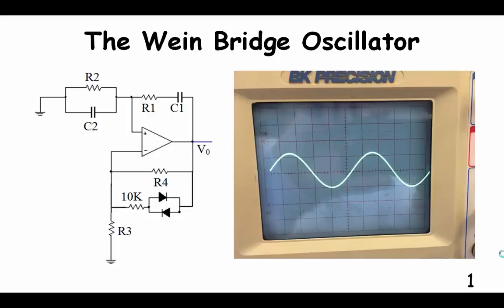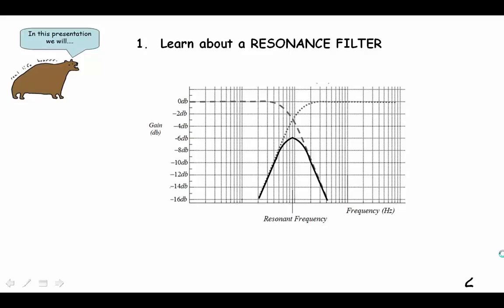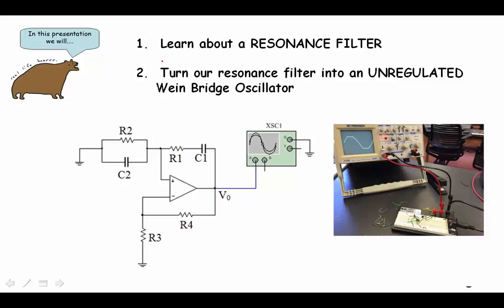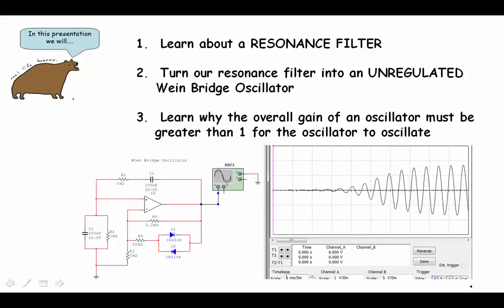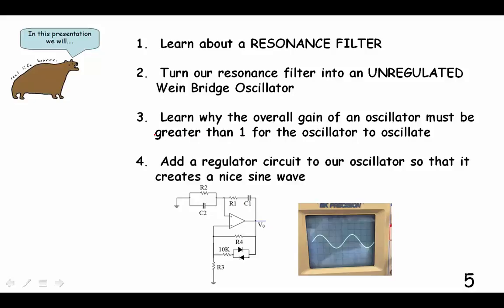Today we're going to study the wine bridge oscillator. We'll learn about resonance filters, turn our resonance filter into an unregulated wine bridge oscillator, learn why the overall gain of an oscillator must be greater than one for it to oscillate, and finally we'll add a regulator circuit so it creates a nice sine wave.